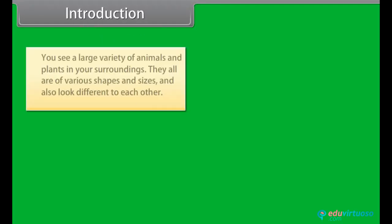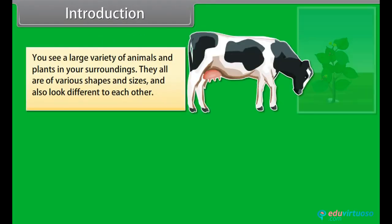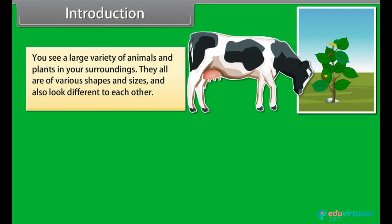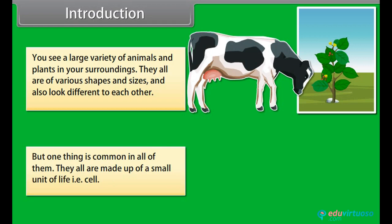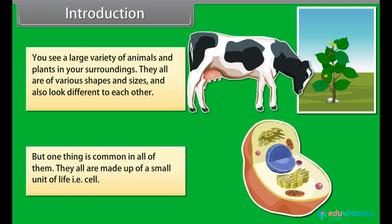You see a large variety of animals and plants in your surroundings. They all are of various shapes and sizes and also look different from each other. But one thing is common in all of them — they all are made up of a small unit of life, that is, the cell. In this module we are going to learn about the cell and its structure.